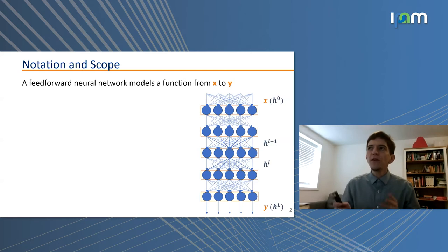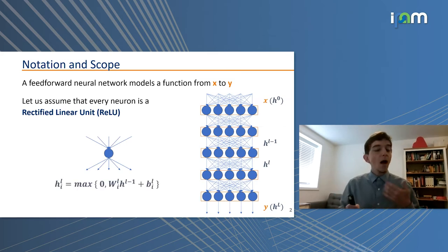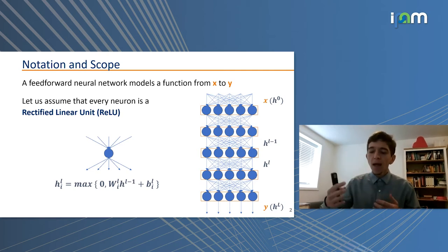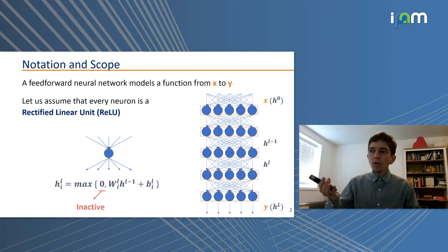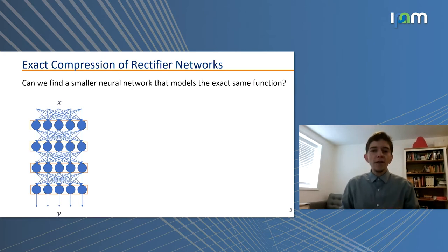In this talk we're going to consider feed-forward neural networks as mapping a function from an input space X to an output space Y. I'll further assume that all neurons are rectified linear units, where the output is given by the maximum between zero and an affine transformation of the inputs given by the weights and the bias. Thinking in terms of biological neurons, the ReLU is inactive when the maximum is obtained with the first term, and active when it's obtained with the second term, producing a positive output.